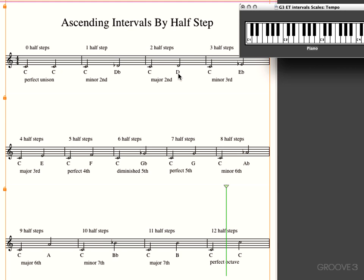You go from C to D, that is two half-steps, you get a major second. And that would sound like... We go from C to E-flat. Three half-steps are a minor third. We can continue on. A major third is four half-steps, C to E.